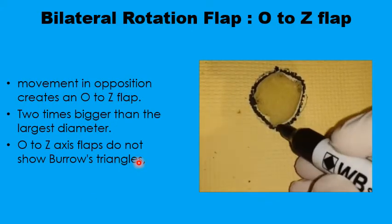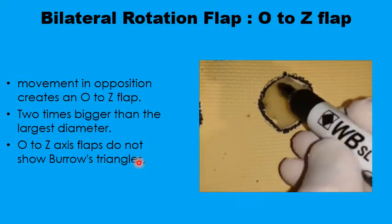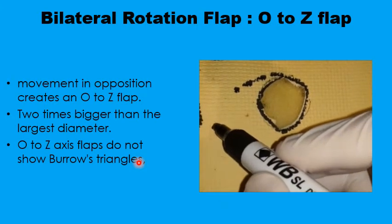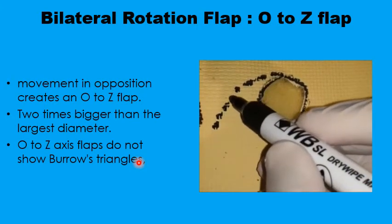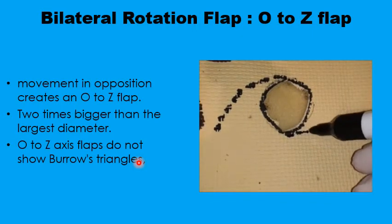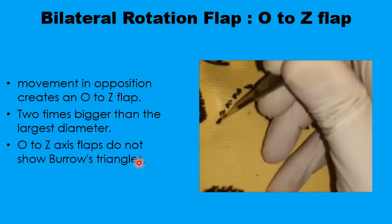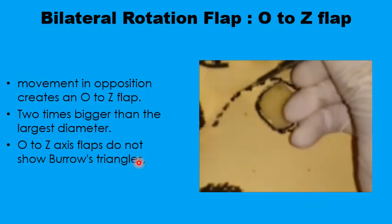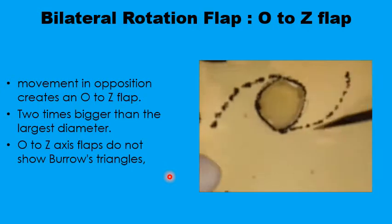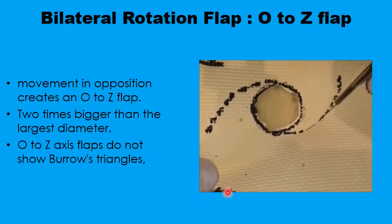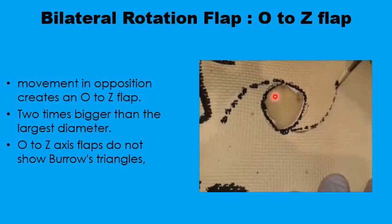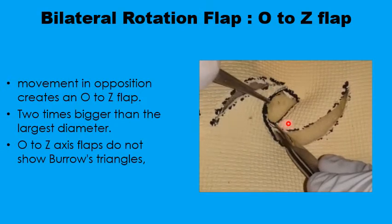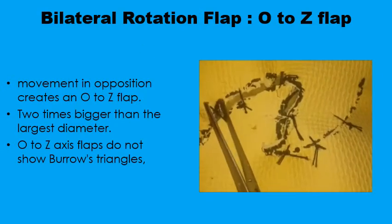You draw the two flaps in opposite directions on both sides. Because you are using two flaps rather than one, the curvilinear line need only extend about 2.5 to 3 times the diameter of the defect. Once the flaps are created and elevated, they are mobilized to meet in the midline of the defect. Once sutured, you will see a Z rather than an O — that is the final closure.